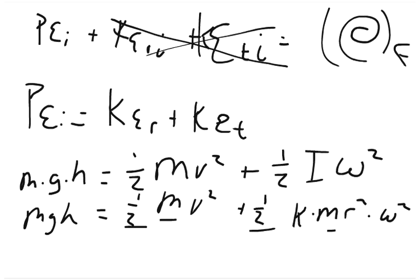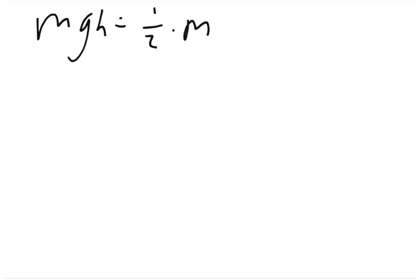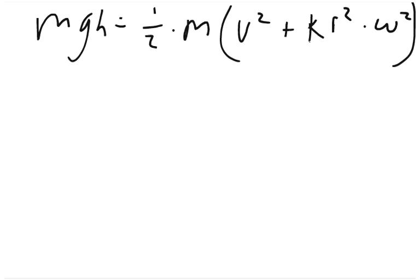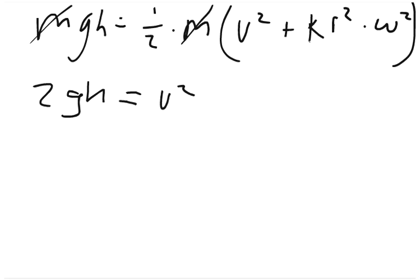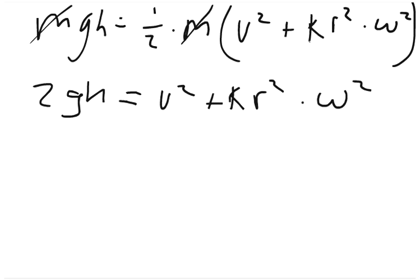We can factor out the one half and factor out the mass, so mgh equals one half times mass times v squared plus k times r squared times omega squared. The mass appears on both sides, so we divide it out. We also multiply both sides by 2, giving us 2gh equals v squared plus k times r squared times omega squared. We have two unknowns — angular speed and velocity — so we want to define one in terms of the other.